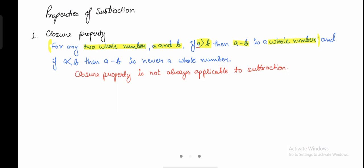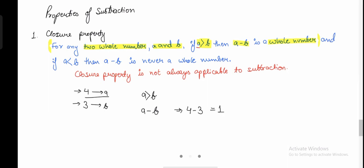We consider any two whole numbers — they use A and B instead of specific numbers because A and B could be any value. We are talking about the scenario where A is greater than B. So let's consider A is 4 and B is 3, so that A is greater than B. Now I'm going to do A minus B, which is 4 minus 3. My answer will be positive 1.